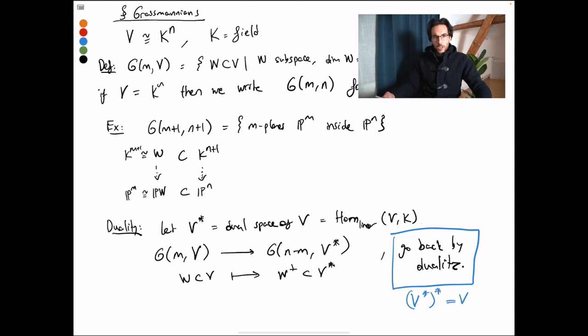So here duality refers to the fact that the dual of a dual is what you started with. So V** is V, and this gives me this inverse map here, and thereby establishing that this is an isomorphism.